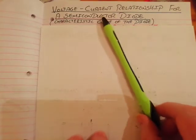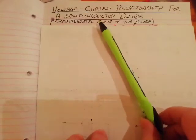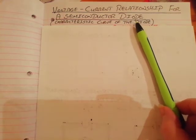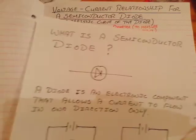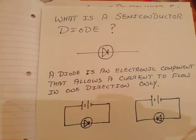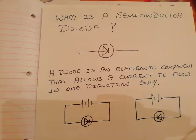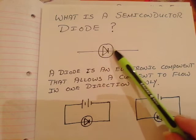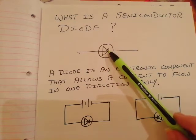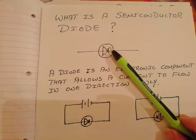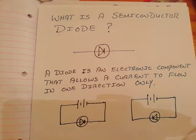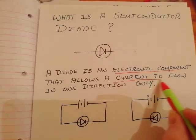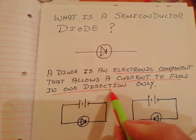Here we are again with the voltage-current relationship for a semiconductor diode, and before we go anywhere, we better be very clear what a diode is. There's its symbol, which is in the maths tables near the end. A semiconductor diode is an electronic component — it's a component that allows a current to flow in one direction only.